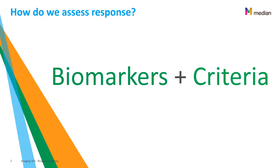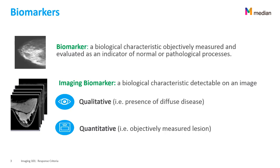Assessment of response in a clinical trial is a combination of biomarkers and criteria. Criteria include biomarkers as part of their definition. The first part of assessing response is a biomarker. A biomarker is a characteristic objectively measured and evaluated as an indicator of normal or pathological processes. For example, body temperature — when it is too high or too low, it is an indication that something is not normal.